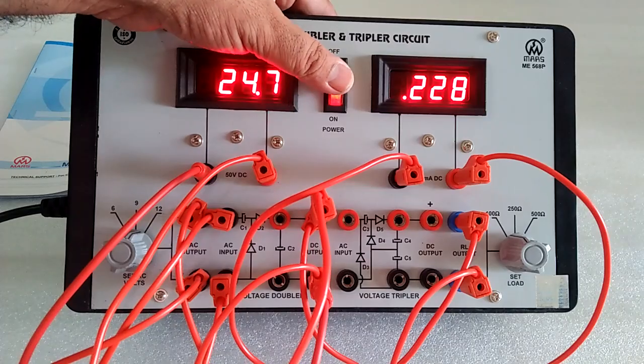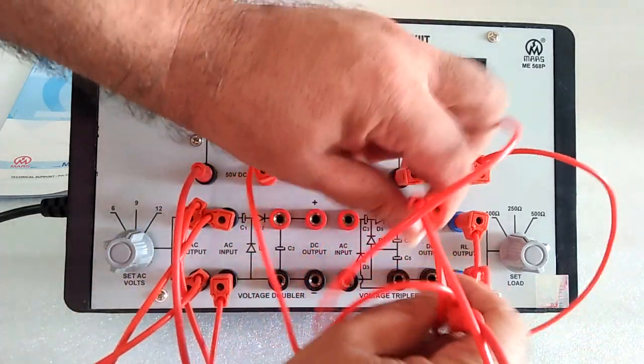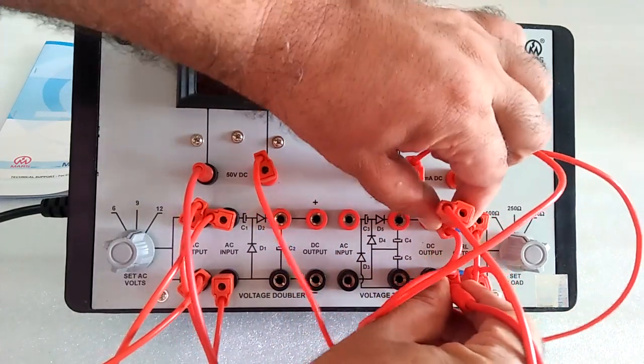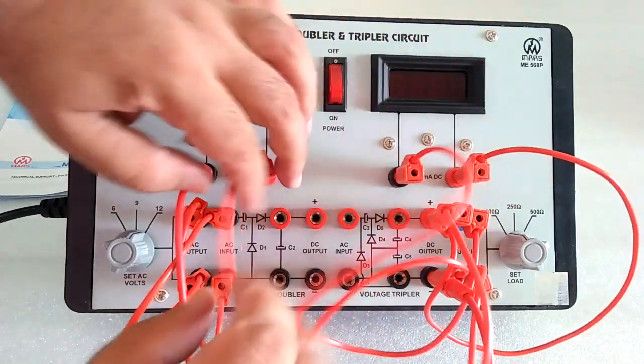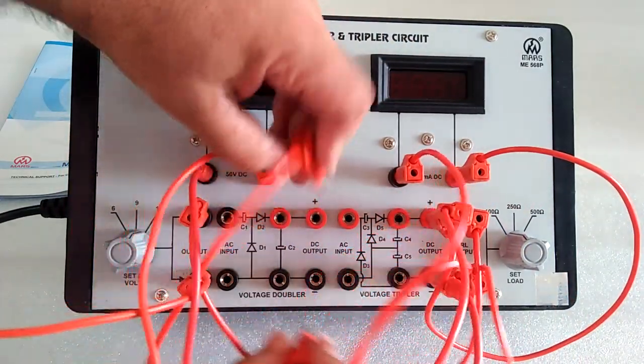For the voltage tripler, we use the same connection. We connect the DC output of the tripler and the AC input which comes from the voltage doubler section.